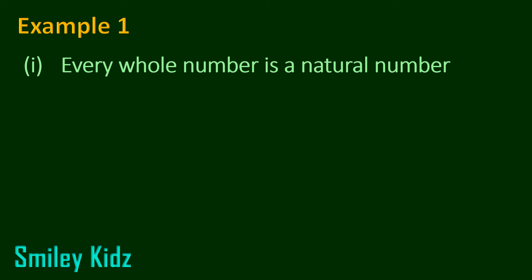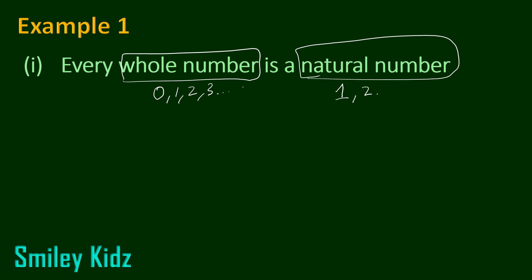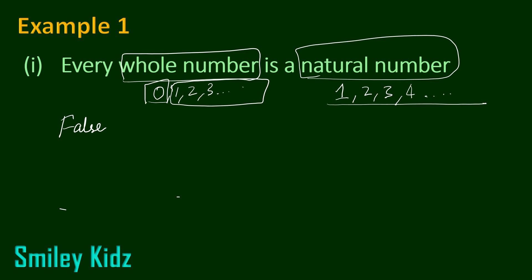Let's see the first statement: every whole number is a natural number. We have seen that whole numbers start from 0 — 0, 1, 2, 3, and so on. Whereas natural numbers start from 1 and are called the counting numbers. The question says that every whole number is a natural number. No — so it's going to be false, because 0 can't be a natural number, as natural numbers start from 1.